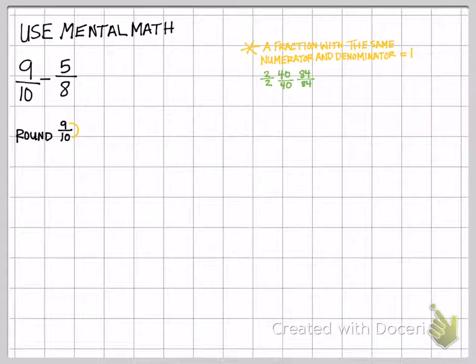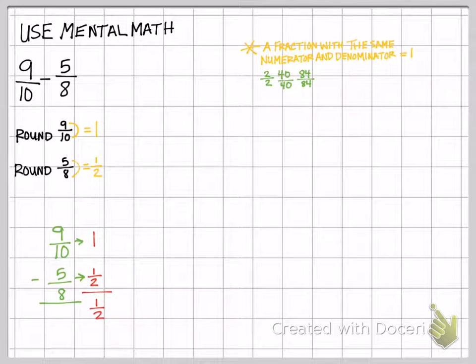First thing I need to do is round 9/10. What I notice about 9/10 is that 9 is almost 10, which means it's almost 10/10, so that equals 1. Now I need to round 5/8. If you don't know already, if the numerator is half of the denominator, then that is an equivalent fraction to 1 half. Since 5 is close to 4 and 4/8 is 1 half, then I can round that to 1 half. Once I've rounded them both, then I can subtract and I get 1 half.